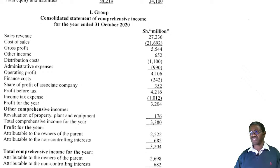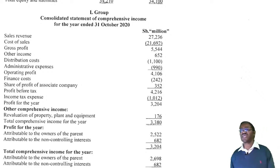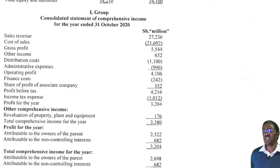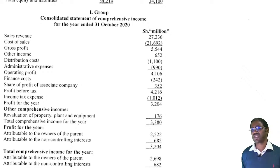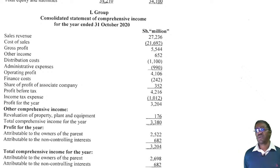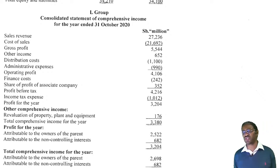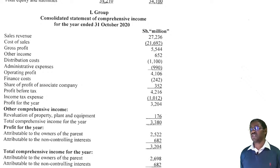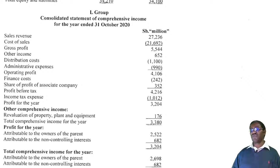After accrued interest, we are given the income statement for the company. In that income statement they give us: sales, cost of sales, gross profit, other incomes, distribution cost, admin expenses, operating profit, finance cost, share of profit of associate, profit before tax, income tax expense, profit for the year, other comprehensive incomes including revaluation of property plant and equipment, total comprehensive income, and how it was attributable to the parent and to the non-controlling interest.